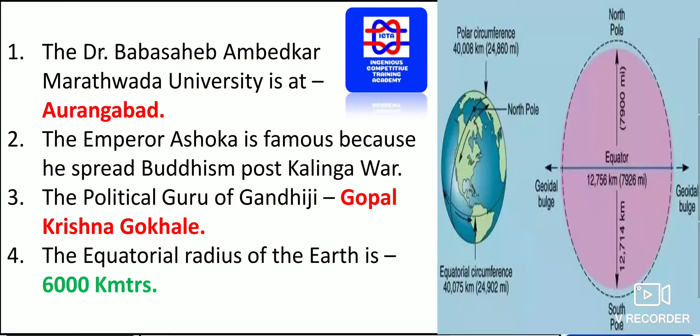Emperor Ashoka is famous because he spread Buddhism after the Kalinga War. He was very famous after this war, having spread Buddhism — both Hinayana and Mahayana. He adopted Buddhism by the advice of Upagupta.